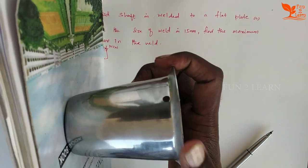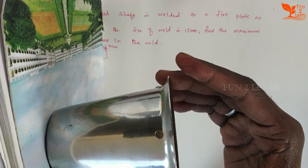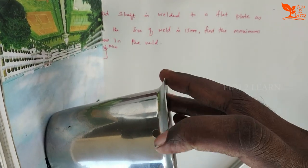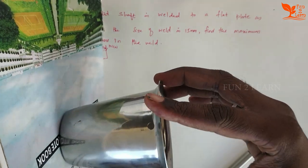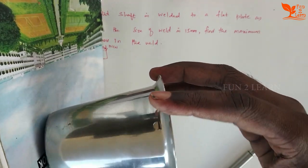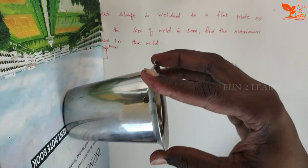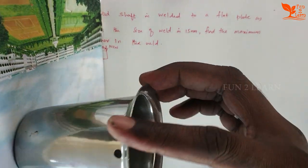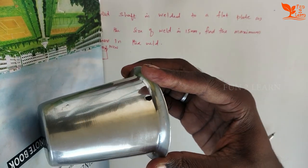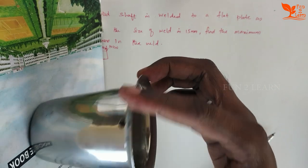Now we have to consider the load on the weld. If you apply the load, you can get a sliding effect, but there is also bending. There is a sliding shape — that is the shear stress — and there is also a bending and tilt shape.